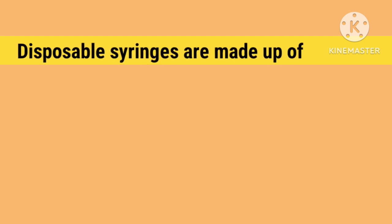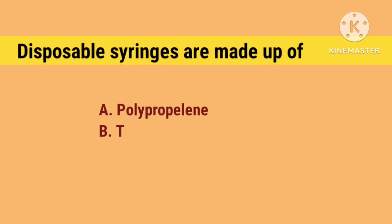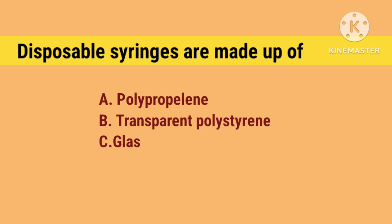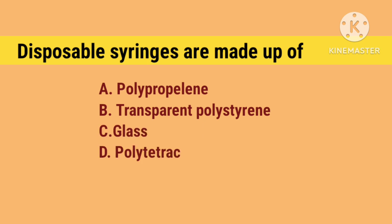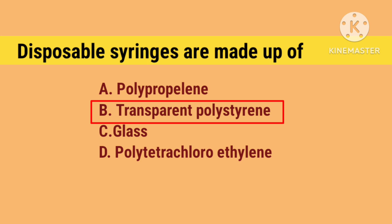Disposable syringes are made up of: Option A. Polypropylene, B. Transparent polystyrene, C. Glass, D. Polytetrachloroethylene. Right answer is B. Transparent polystyrene.